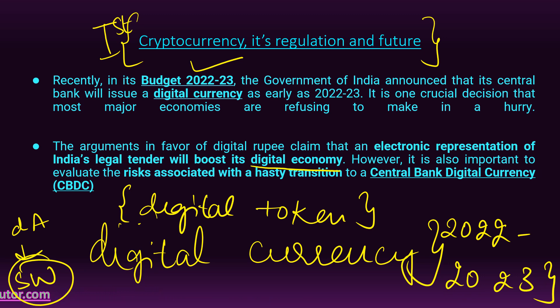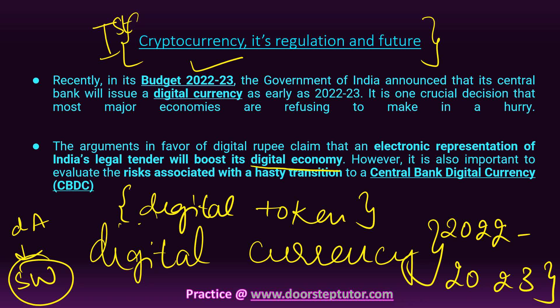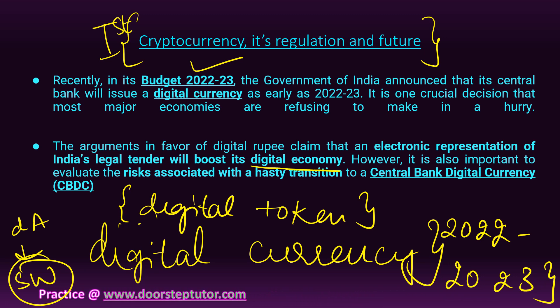Like cash, the Digital Rupee will automatically be a liability of the RBI - like bank notes minus ATMs. The basic aim of CBDC is to bring in the best of both worlds: the convenience and security of digital forms like cryptocurrencies, and the regulated, reserve-backed money circulation of the traditional banking system. It will also mitigate the risk of losses that Indian depositors face when dealing with commercial banks, and an e-currency could eliminate the need for an expensive network.